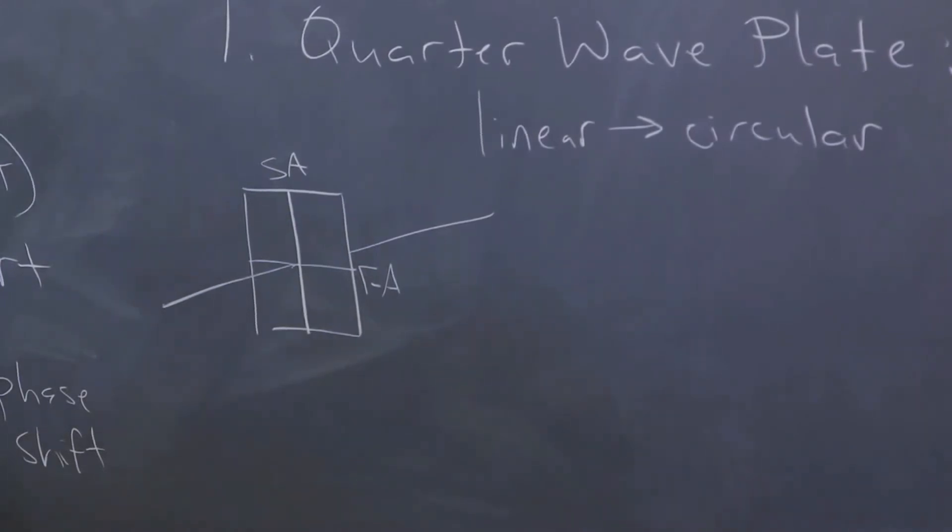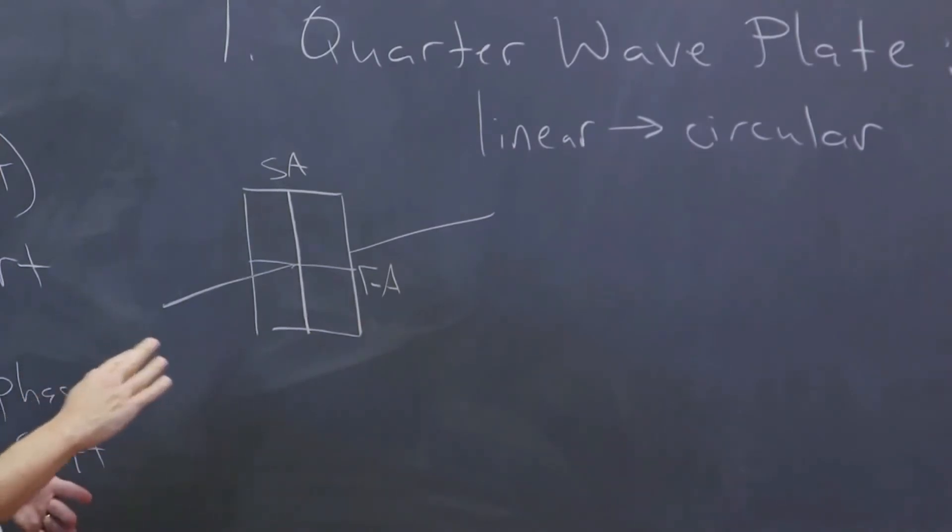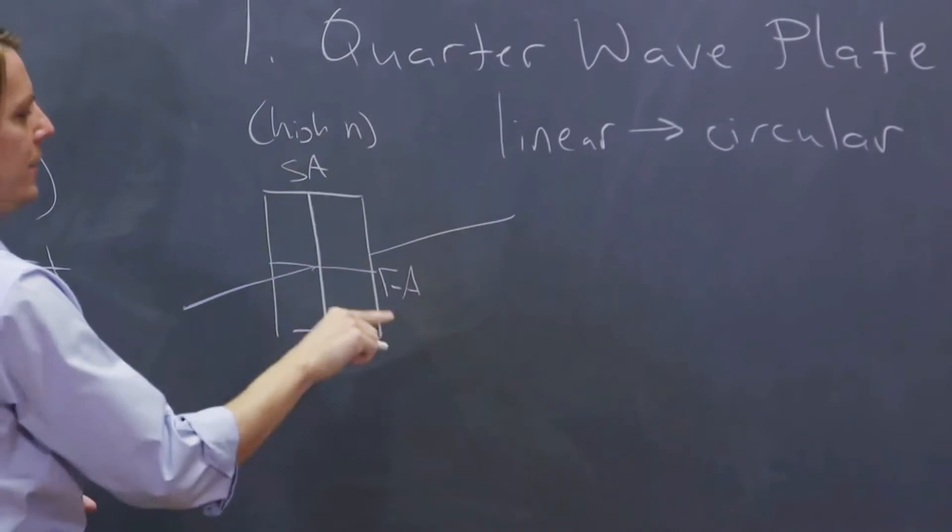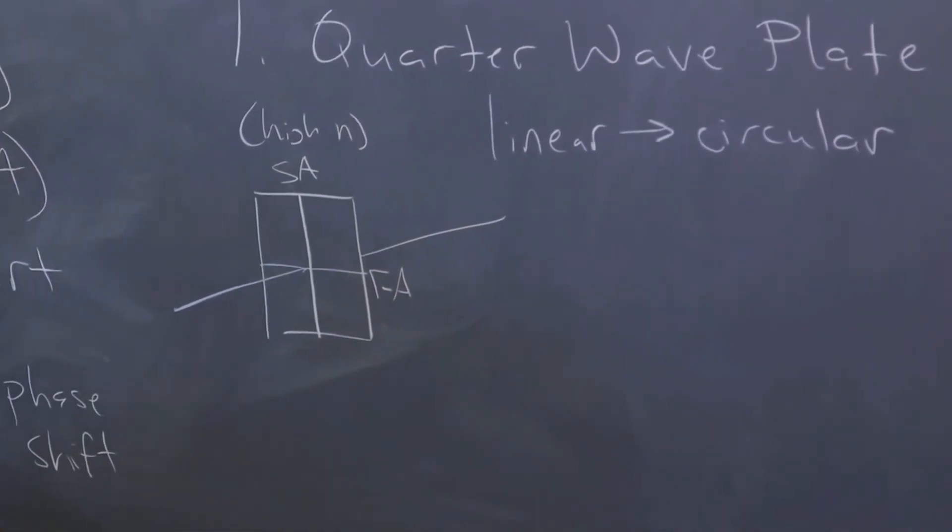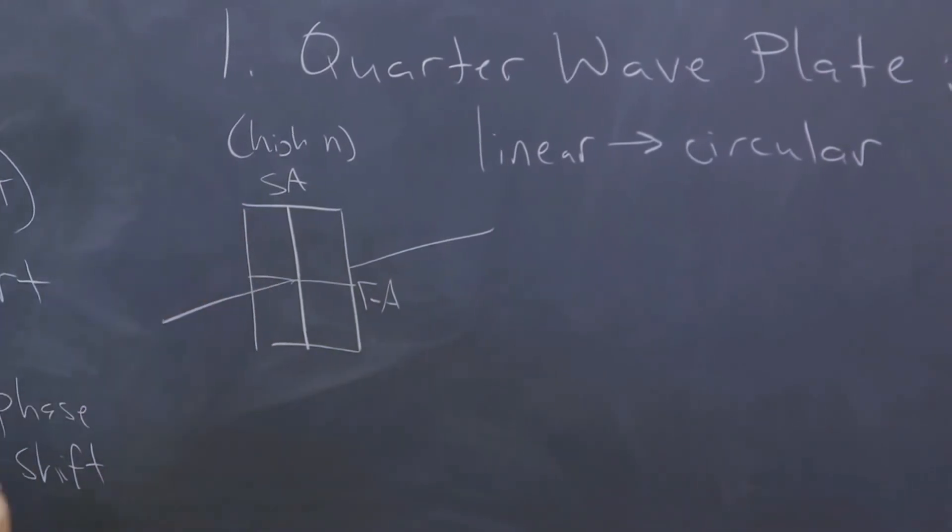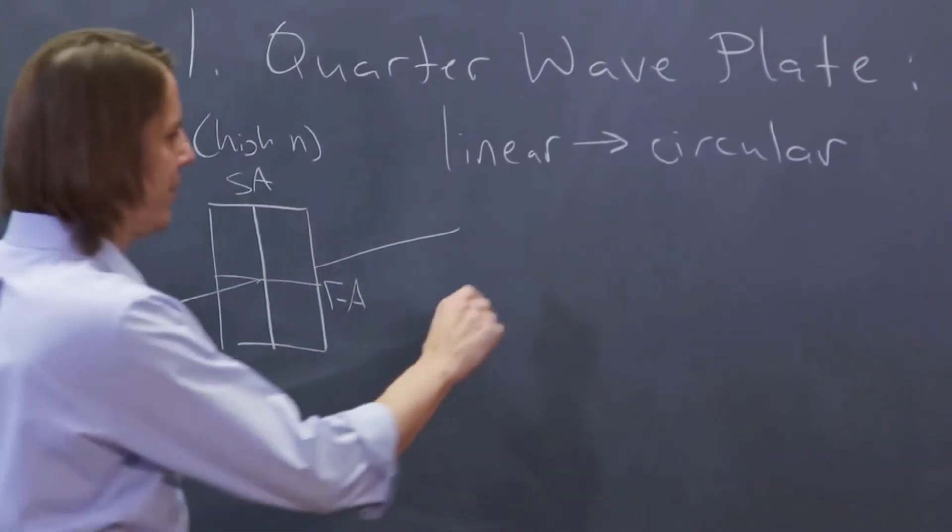All right, so then this would be the slow axis. And remember, slow and fast literally means the phase velocity of the wave. So this is the higher index here, and this is the low index here. It's the speed of light over n. So if this is the slow axis, this way the wave actually travels more slowly.